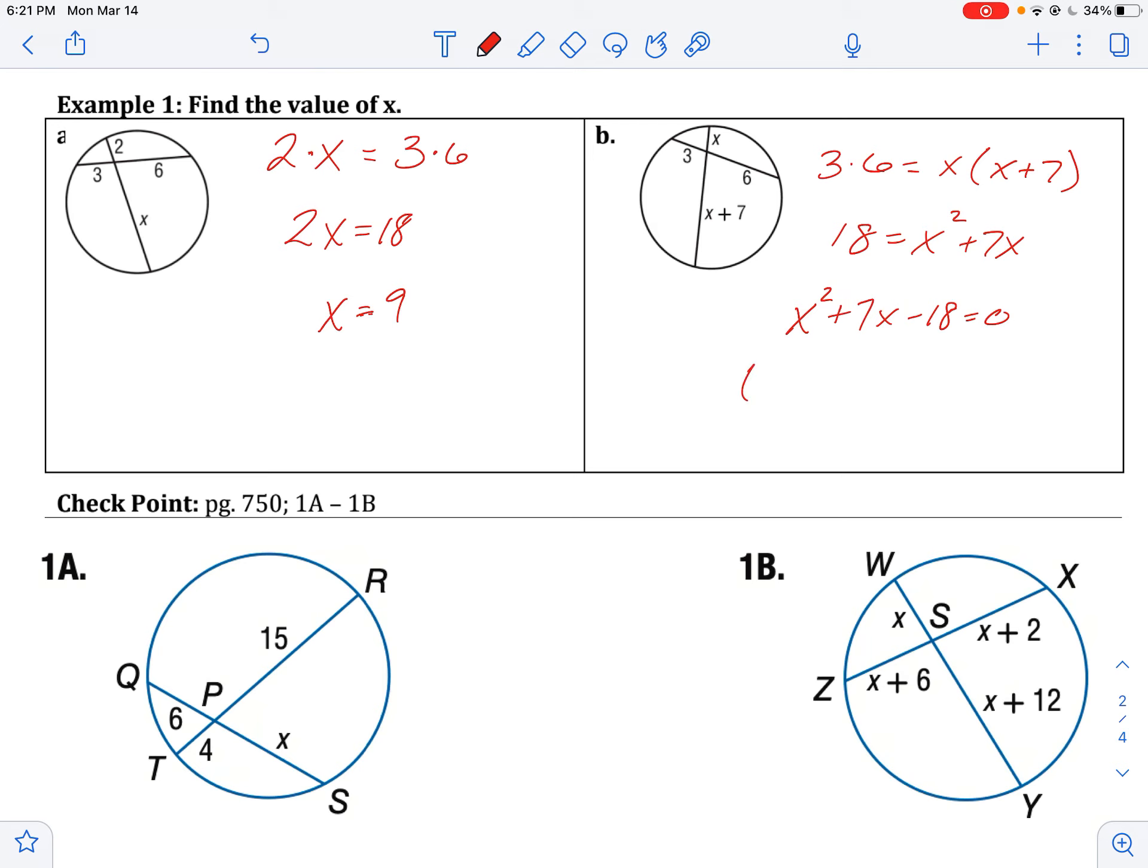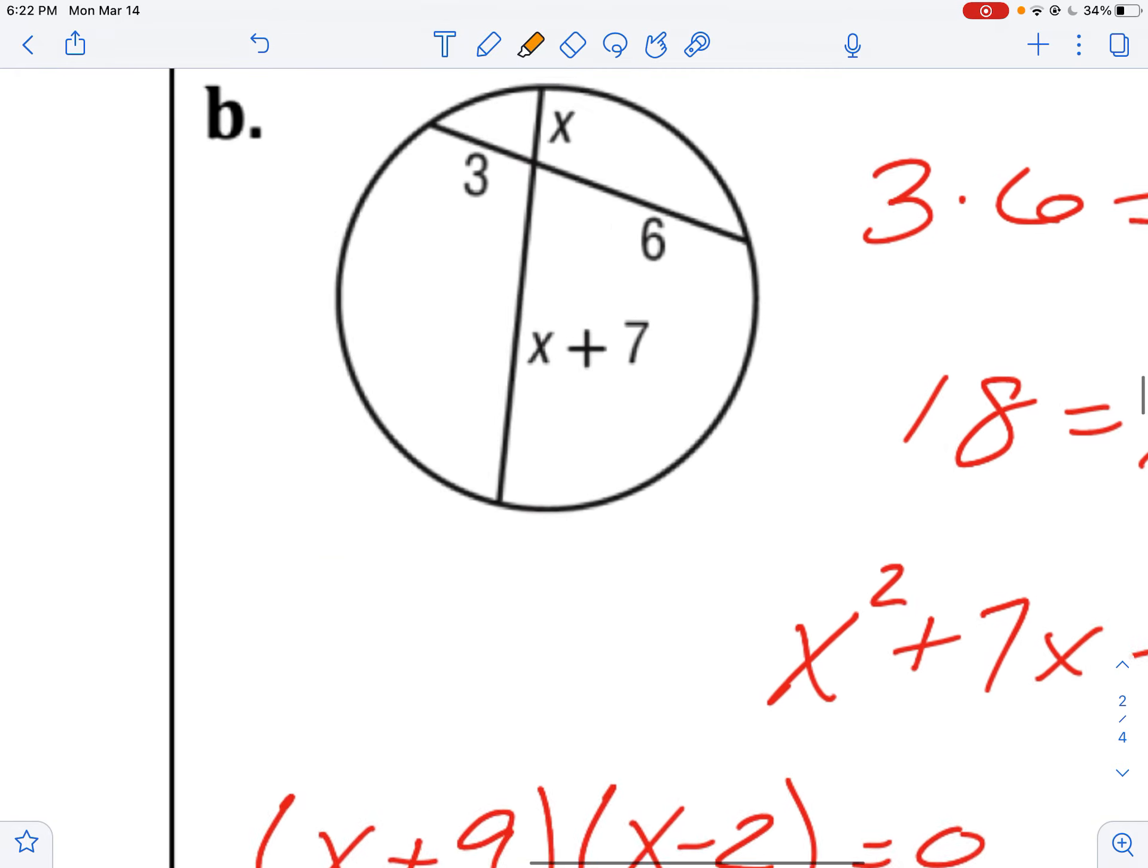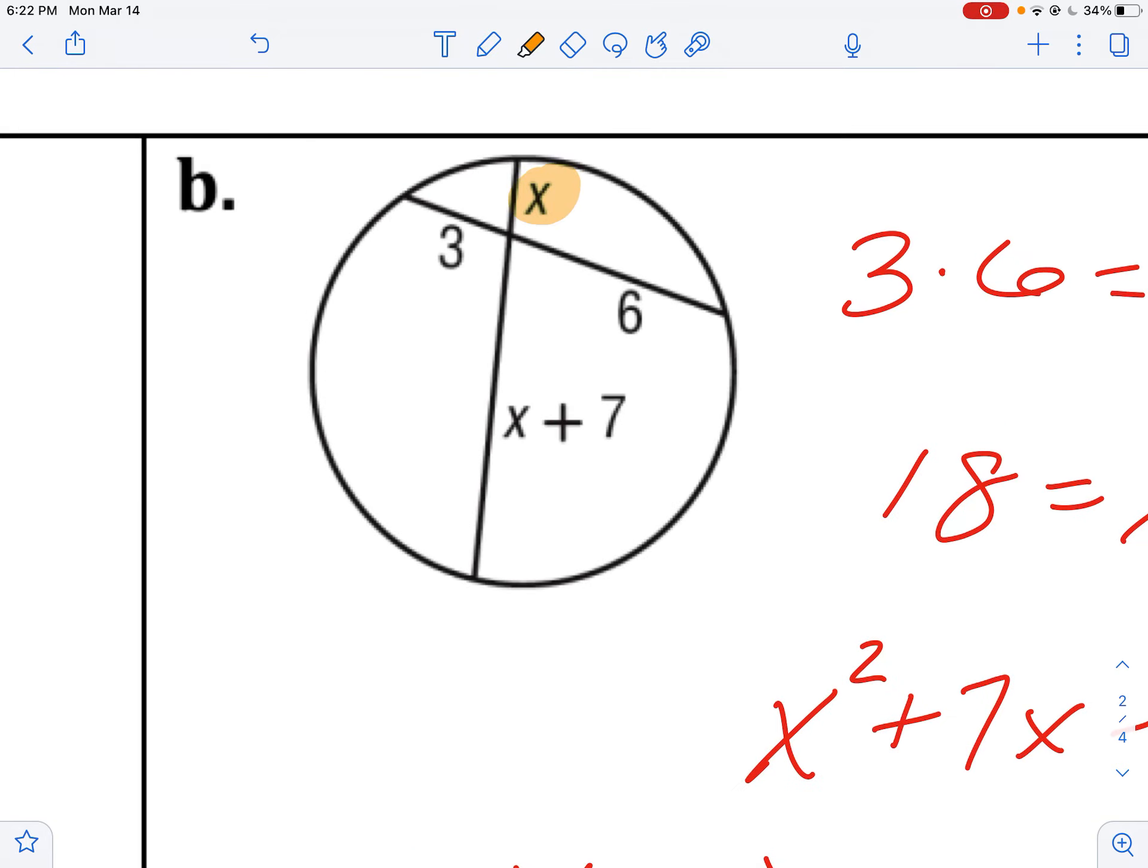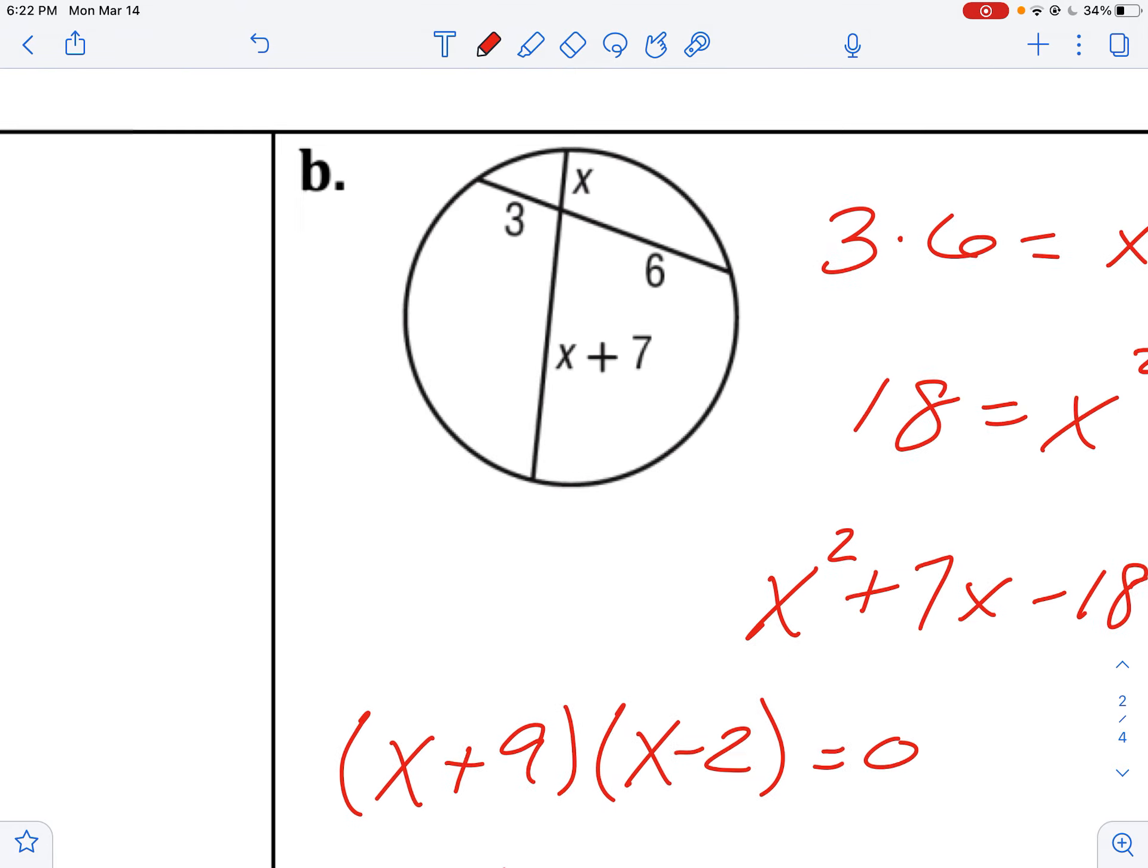So I would get factors of 18 are 1 and 18, 2 and 9, 3 and 6. And I could factor this to make X plus 9 and X minus 2. So my final answers, my two options would be X equals negative 9 or X equals positive 2. But I know that I cannot have a negative 9. Because if I look at this, this segment cannot be negative 9 units long. That doesn't make sense.